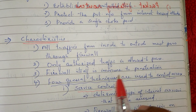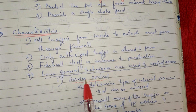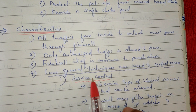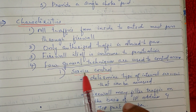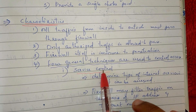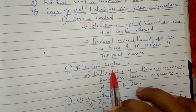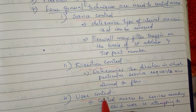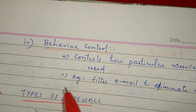Now we have four techniques with access control. The four control techniques are called Service Control, Direction Control, User Control, and Behavior Control.